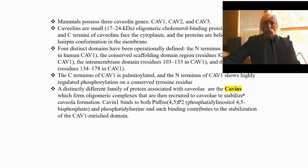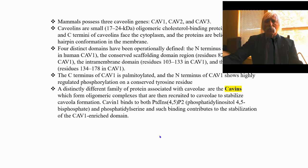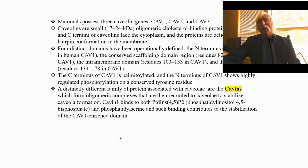There's a distinct family of proteins called the cavins. They form oligomeric complexes in the caveolae and are recruited to the caveolae via membrane lipid raft mobilization from the Golgi. They stabilize the caveolae as it's forming and when it's formed. Cavin 1 binds phosphatidylinositol 4,5-bisphosphate and also phosphatidylserine, which is a phosphoglycerolipid; such binding contributes to the stabilization of the caveolae domain that has a CAV1.